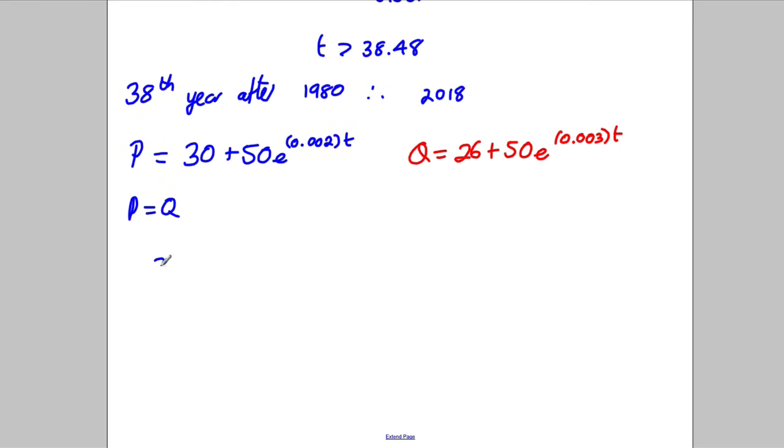So if P equals Q, let's write down what we've got. We've got 30 add 50 e to the power of 0.002 times T is going to be equal to 26 plus 50 e to the 0.003 times T. Now let's subtract 26 of both sides, so here we would get 4 plus 50 e to the 0.002 multiplied by T is going to be equal to 50 e to the 0.003 multiplied by T.